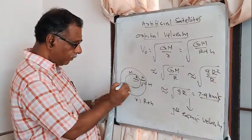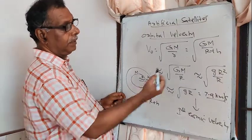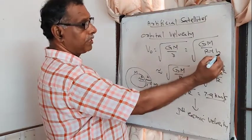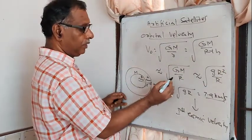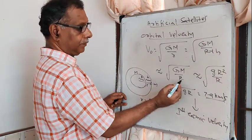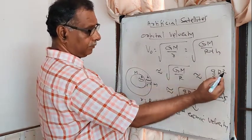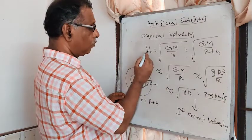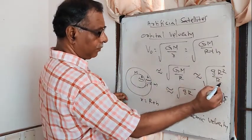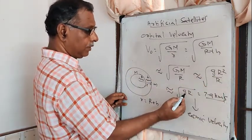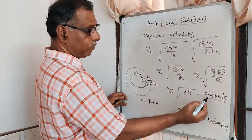If the satellite revolves very close to the surface of the earth, H ≈ 0. Since G·M = g·R², the orbital velocity simplifies to Vo = √(g·R).